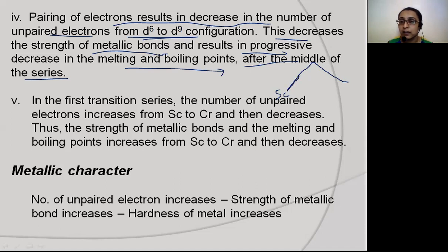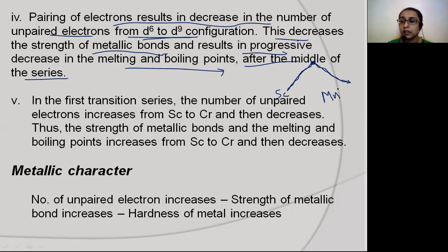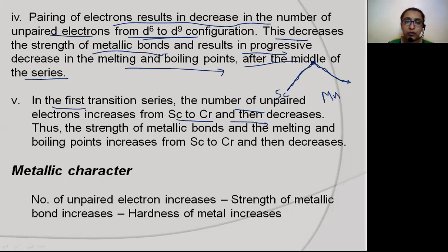So the graph for melting and boiling points initially increases, reaches a maximum, then decreases after the middle of the series. Manganese has an exceptionally higher melting point because of its complicated structure. Similarly for technetium in the second series. In summary, from scandium to chromium/manganese, the number of unpaired electrons increases, metallic bond strength increases, and melting/boiling points increase; then they decrease towards the end of the series.